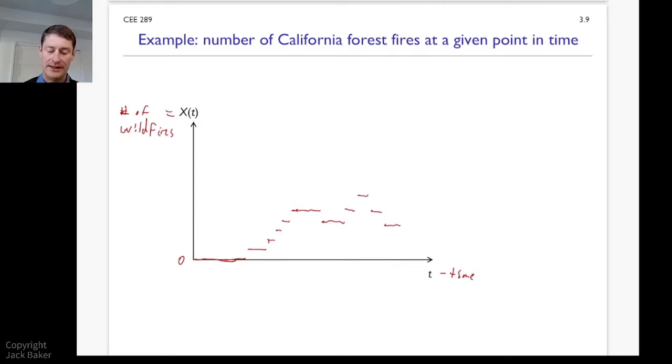So in this case, I have time on the x-axis is continuous. So at any instant in time, I can evaluate this process. And that the number of wildfires, the X of t, is discrete. So there's only integer values of numbers of wildfires. So there's four different examples over the previous four slides, showing all four combinations of discrete and continuous parameters and x's.